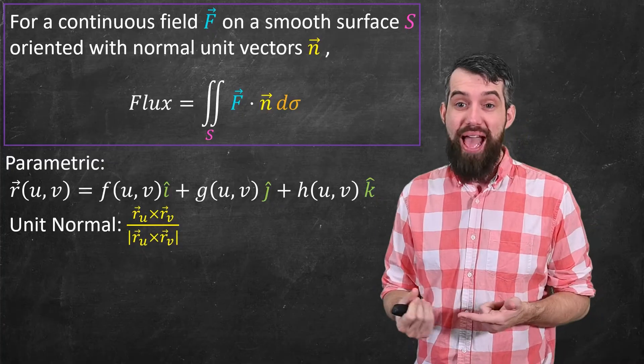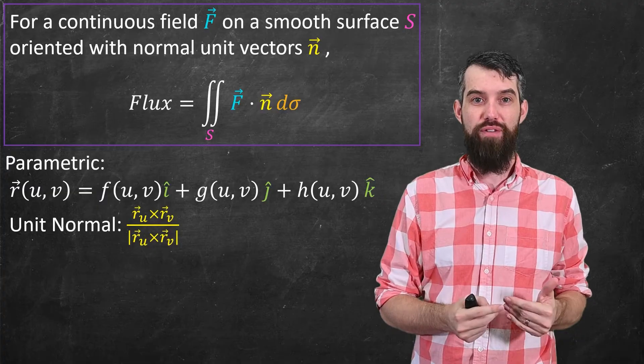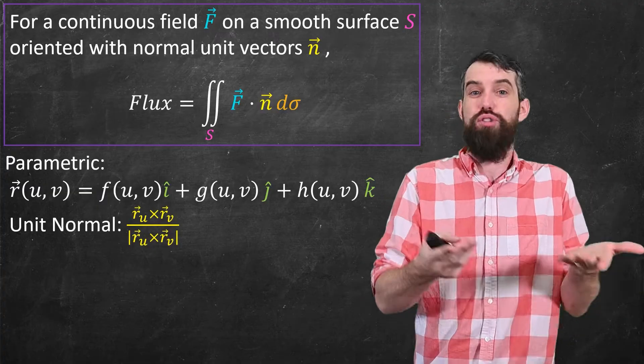And so I'm going to imagine that if my surface is orientable, that I'm choosing this particular set of unit normal vectors versus the negative, which also could have been possible.